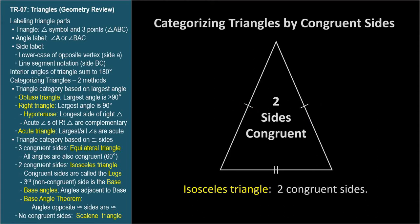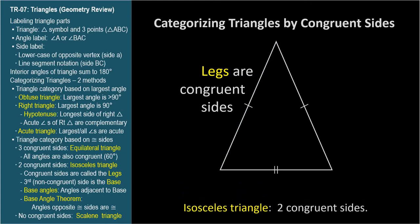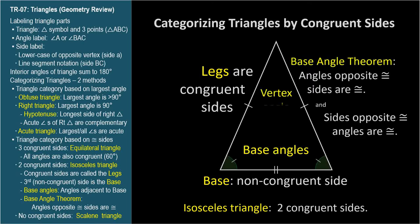Isosceles triangles have some special vocabulary. The two congruent sides are called legs, and the third side is called the base. The pair of angles adjacent to the base — that is, opposite from the congruent legs — are called base angles, and base angles are always congruent. This is the base angle theorem: the angles opposite congruent sides of an isosceles triangle are congruent.